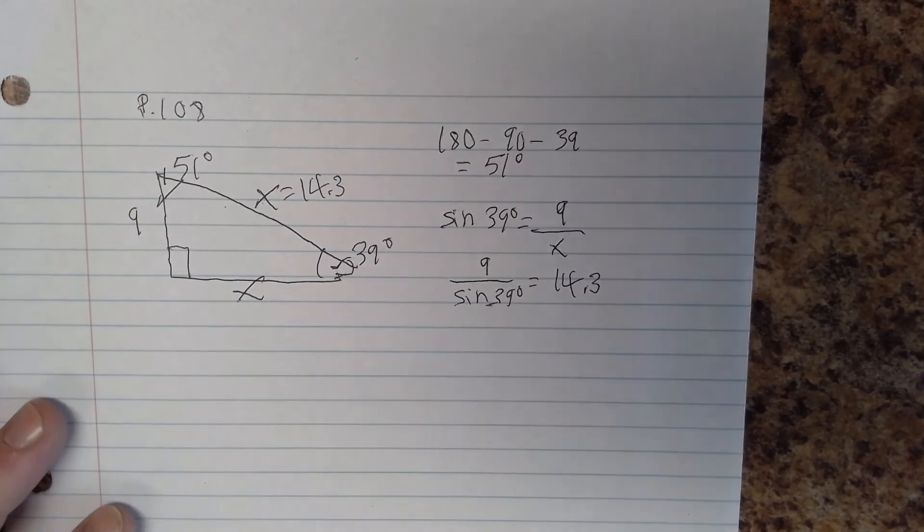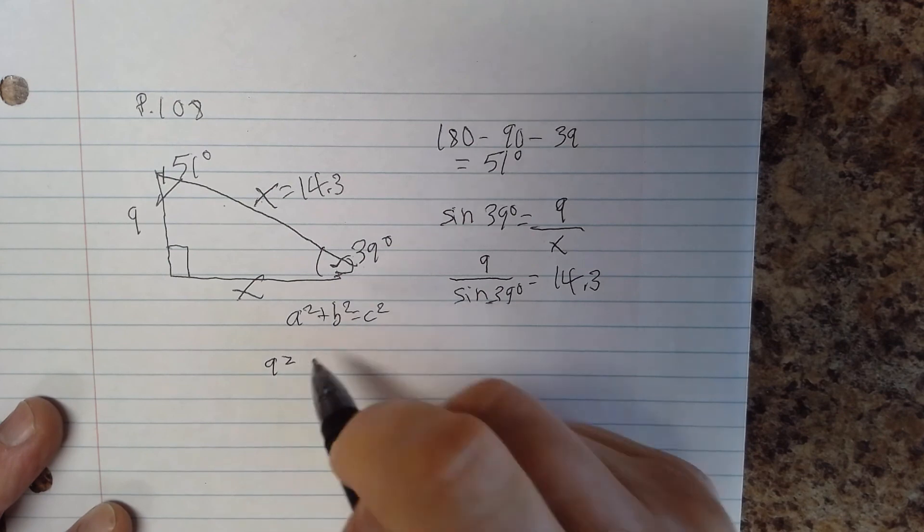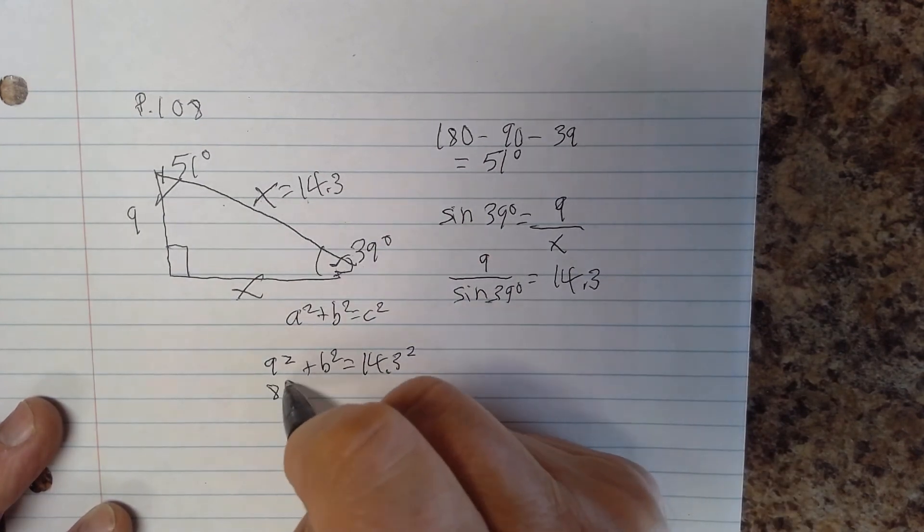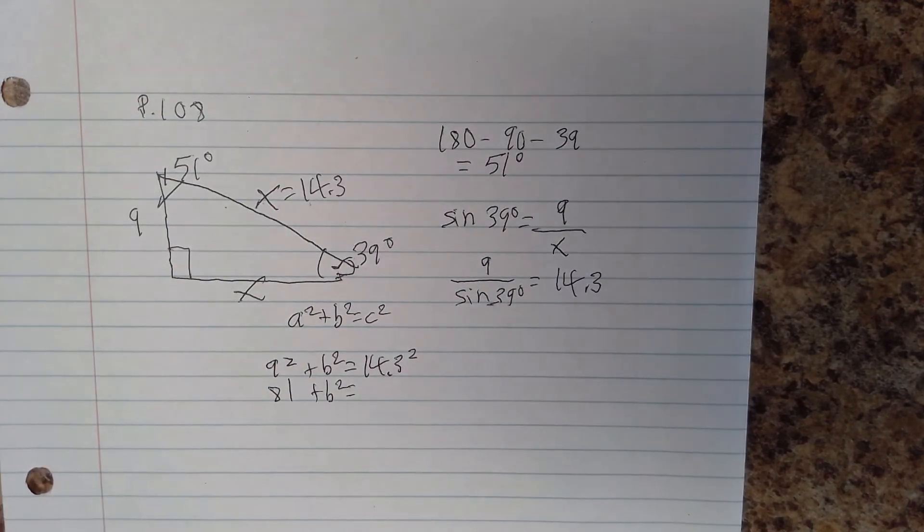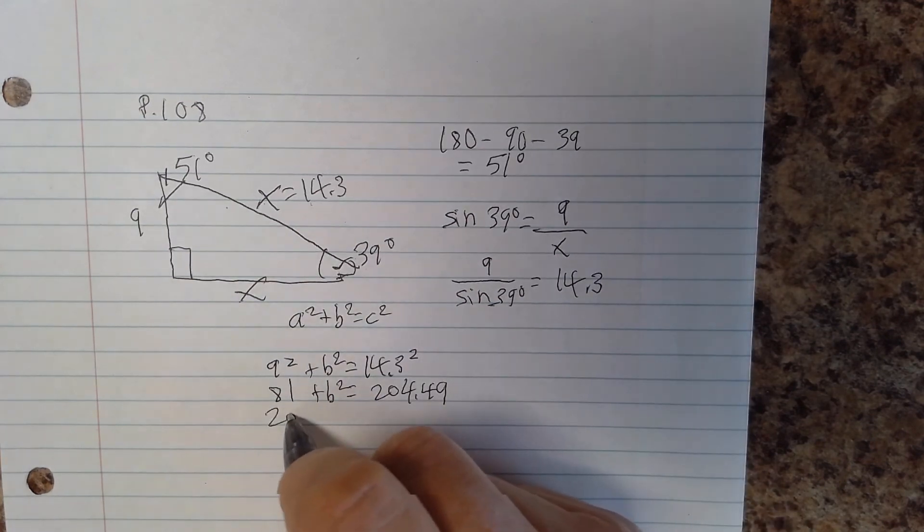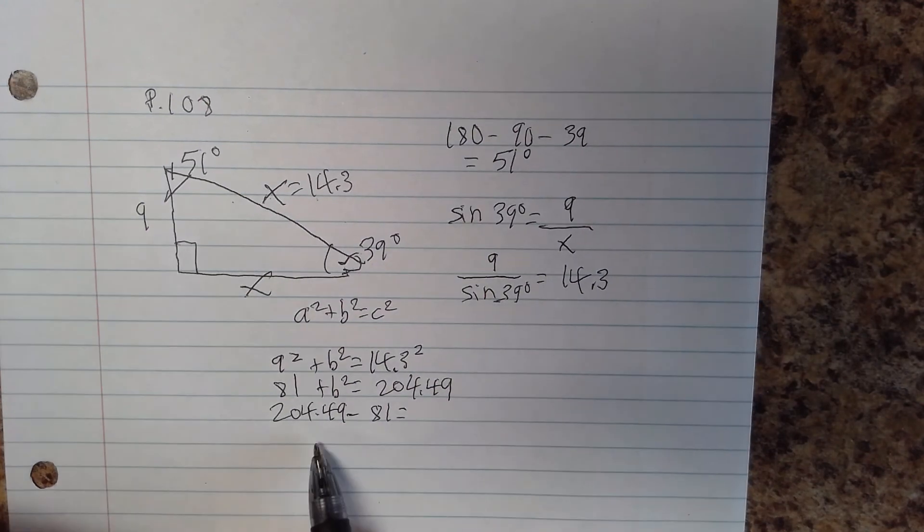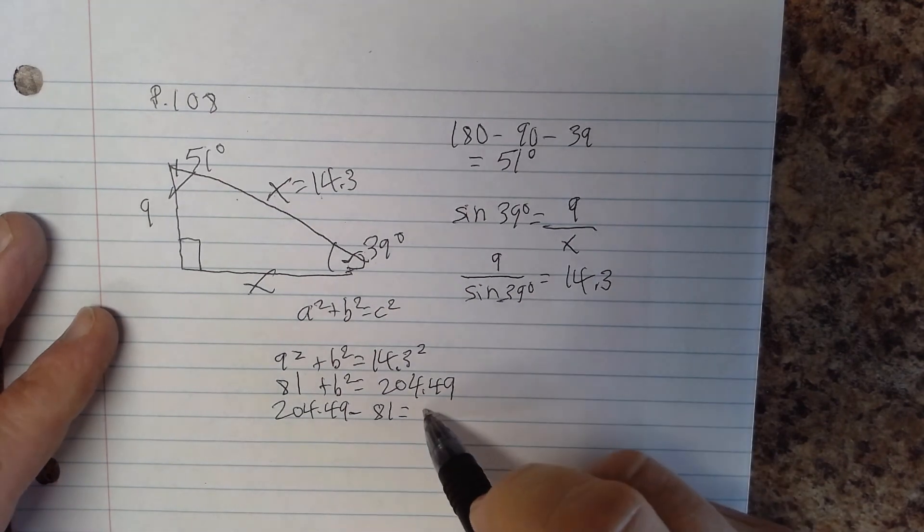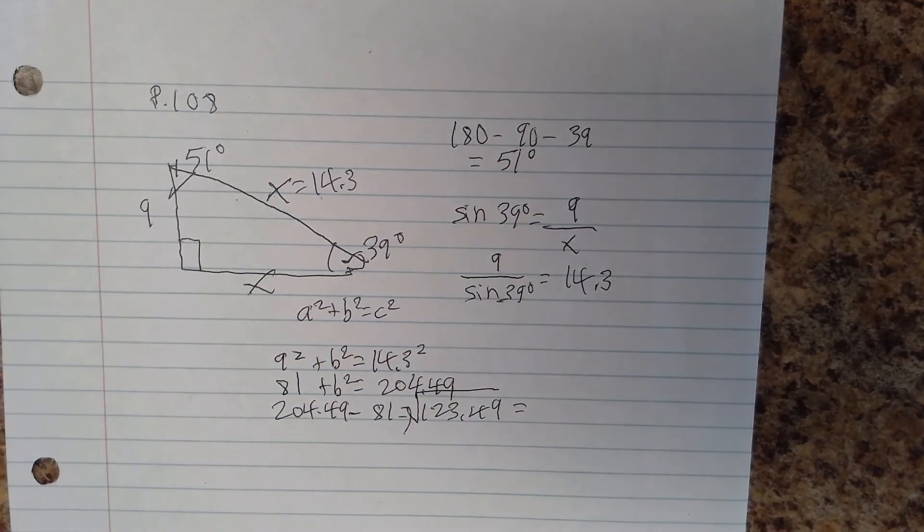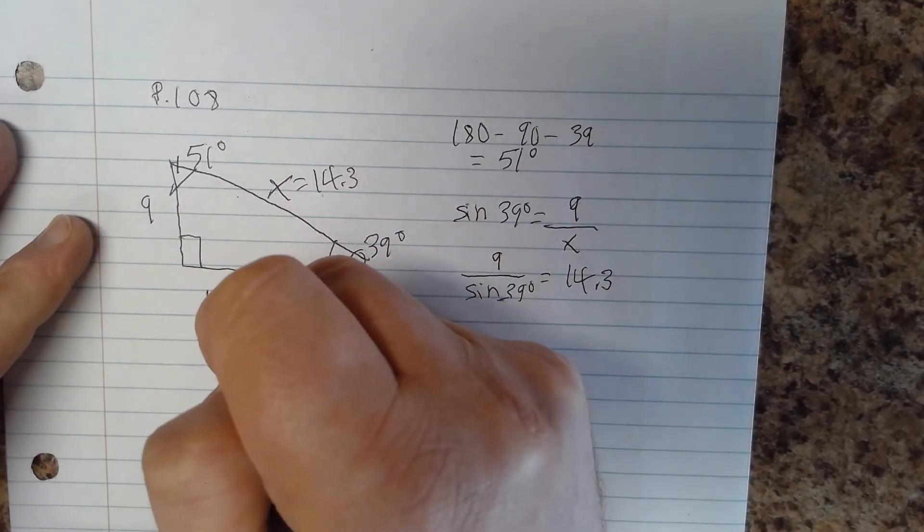And now I can just finish off with Pythagorean theorem, just like we did the previous question. A squared plus B squared equals C squared. Side A is 9, side B is the unknown, and side C is 14.3 that we just found out. 81, and B squared equals 14.3 squared, 204.49. And then we write 204.49 subtract. When you know the long side you have to subtract, right? It's 123.49, 11.11. And that's here, that's the middle side.